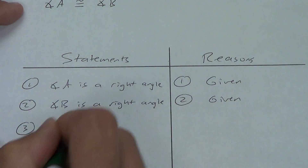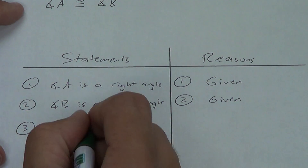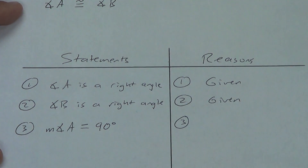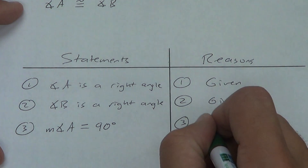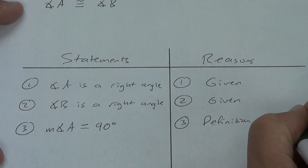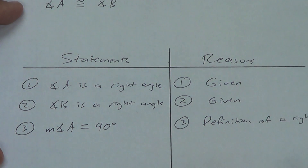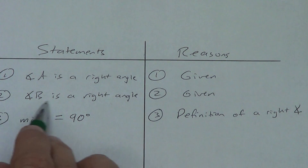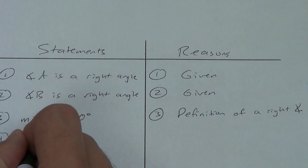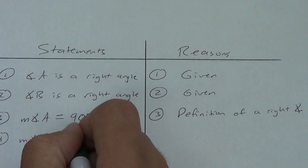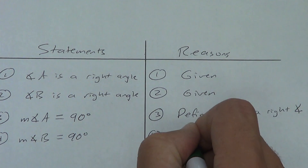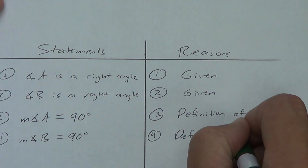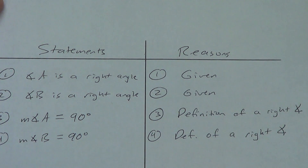So the measure of angle A — remember to put the M for measure — equals 90 degrees. The reason is the definition of a right angle. Angle B is a right angle, so we can do the same basic thing: the measure of angle B equals 90 degrees. Once again, the reason is definition of a right angle — we can abbreviate that if we want, as long as it's very obvious what you mean.